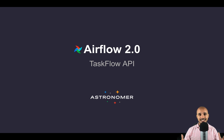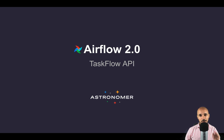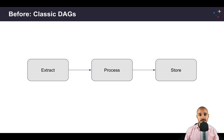Well, in Airflow 2.0 there is a new concept that has been introduced: the Taskflow API. But before getting started, let me show you how it was in Airflow 1.10.x. Let's imagine that you have this very simple data pipeline with three tasks: extract, process, and store — all implemented using the Python operator.